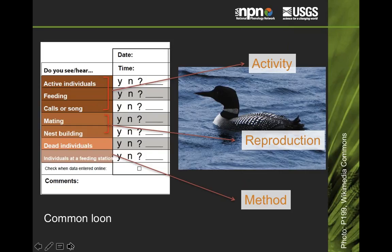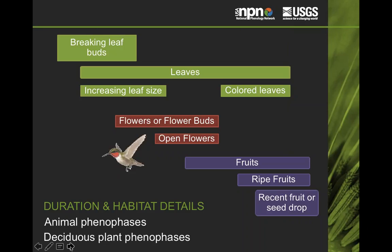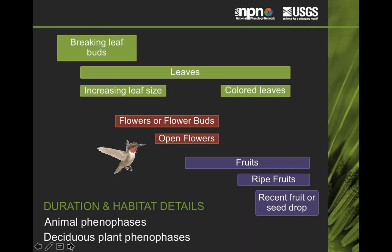The same is true for animals. Our database is a little different because it doesn't just capture whether or not you see an animal at a site, but gives you more opportunity to tell us about what that individual is doing. On this data sheet, we're asking for active individuals, whether or not they're feeding or mating, and that gives a better picture of what's happening with that animal in the environment. You can see that phenophases for a deciduous plant overlap with each other — there might be leaves, flowers, and fruits occurring at the same time — and having animal data tells us more detail about when they might be visiting plants.